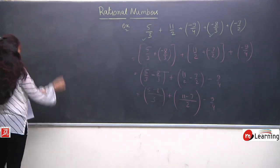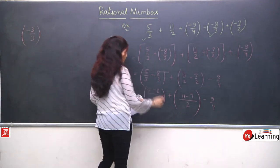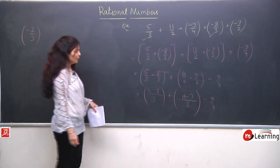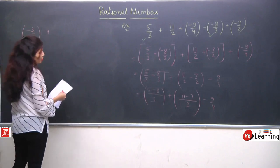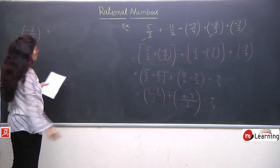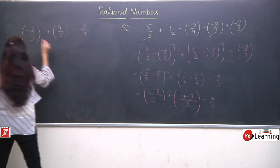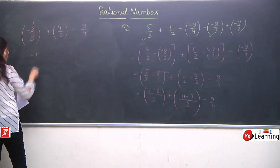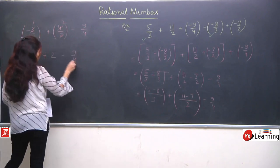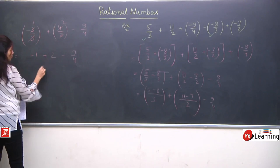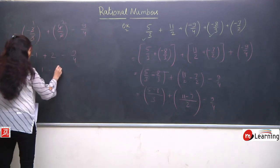So we have -3/3, 4/2, and -9/4. Now 3 and 3 cancel, giving -1. Then 4/2 simplifies to 2. So we have -1 + 2 - 9/4. Now -1 + 2 = 1, since the greater number has positive sign. Then we have 1 - 9/4. We put the 1 in denominator as 1/1 so that both are fractions. LCM of 1 and 4 is 4, giving 4 - 9 = -5/4.